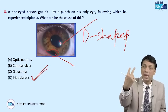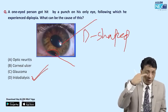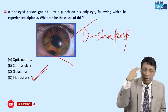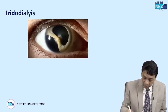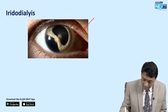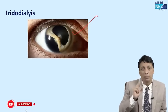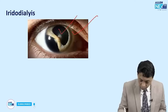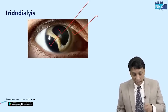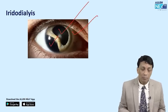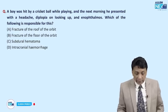The iridodialysis acts as a second pupil. Two light rays enter the eye — one through the normal pupil and one through the pseudo-pupil created by the dialysis — causing monocular diplopia. The original pupil becomes D-shaped. You can see both openings forming a dual pupil appearance, and that is why the patient has monocular diplopia. Iridodialysis can lead to monocular diplopia.